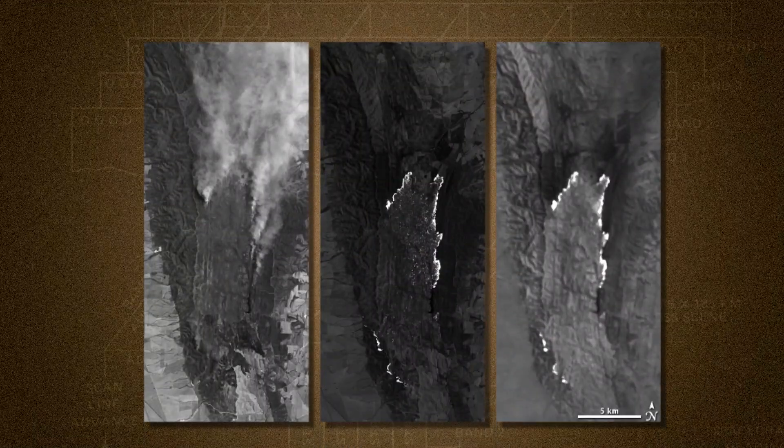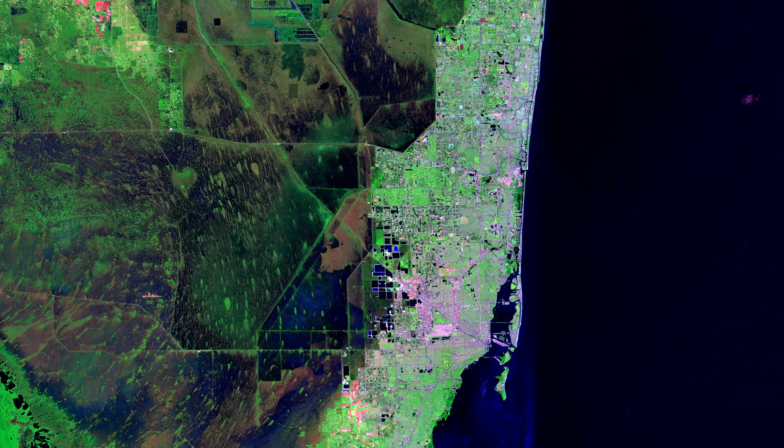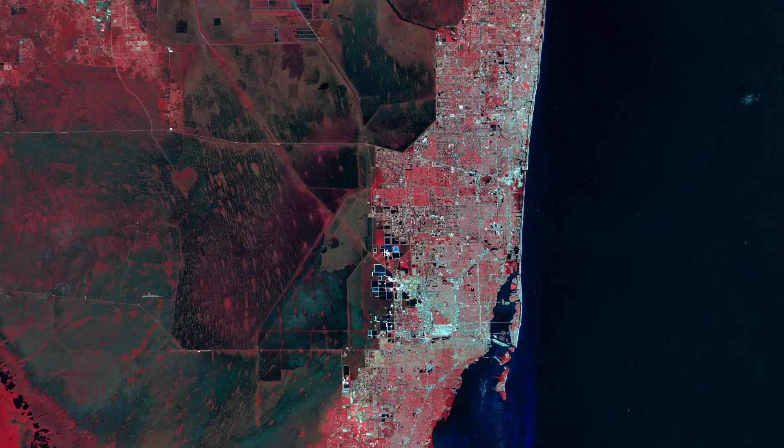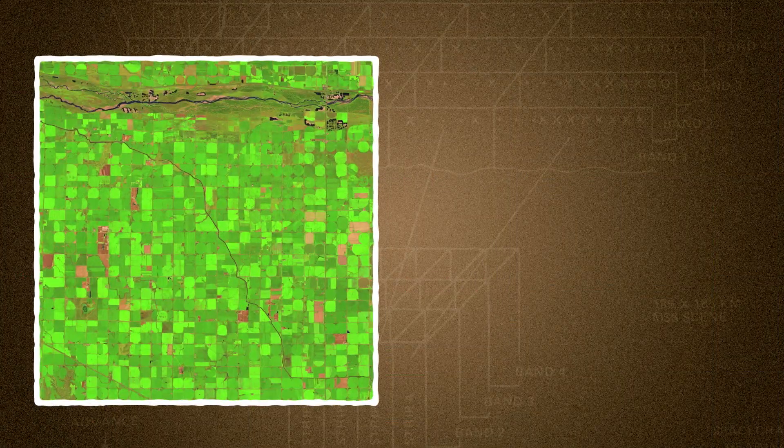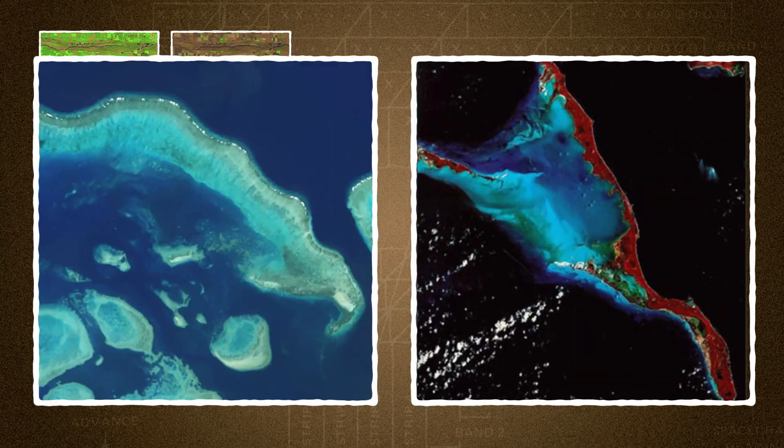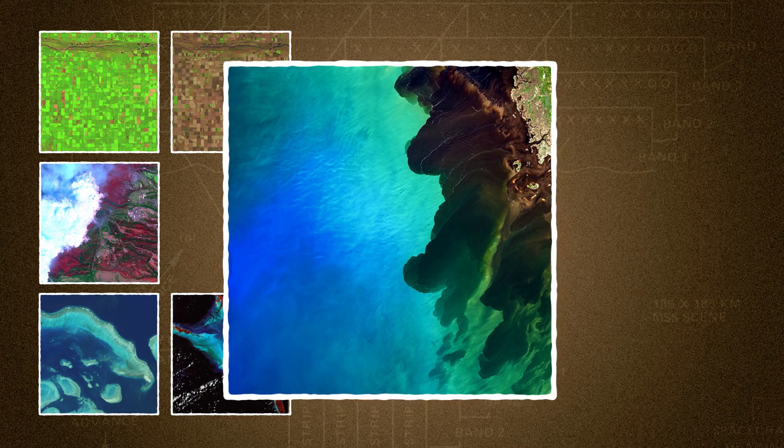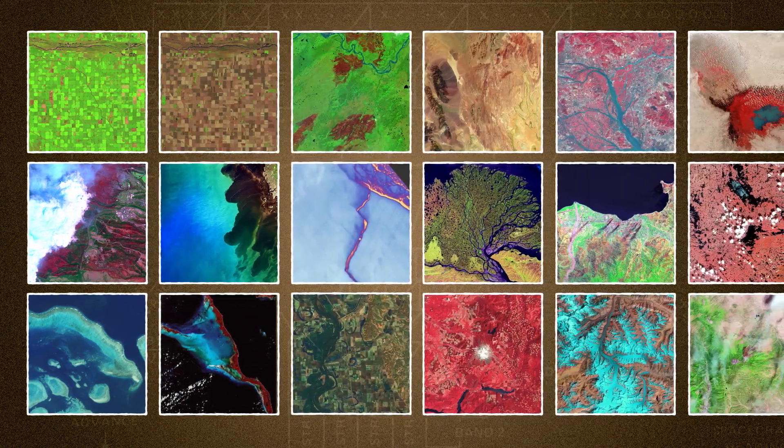Landsat also captures light that we can't see. That type of light can reveal some incredible things when you look at a false color image. Like the difference between types of plants, how healthy those plants are, healthy coral reefs, and even dead coral reefs, fire tracking, ocean pollution. The possibilities are nearly endless.